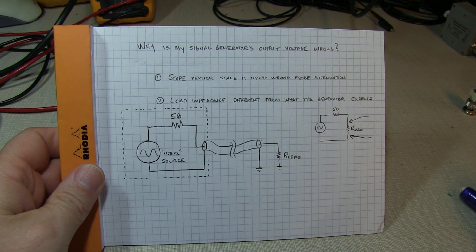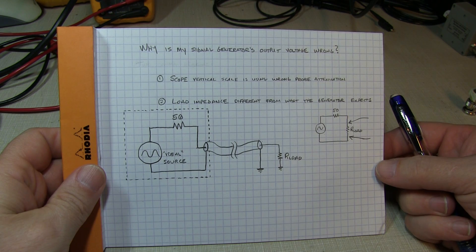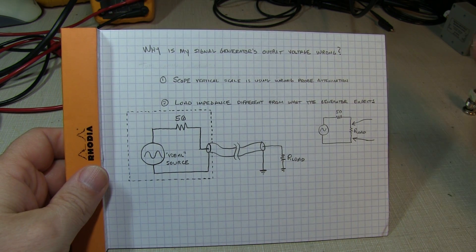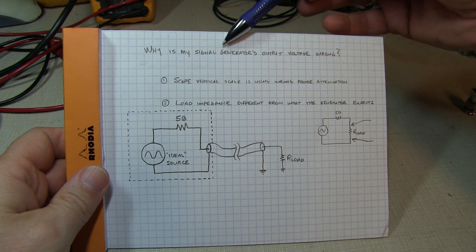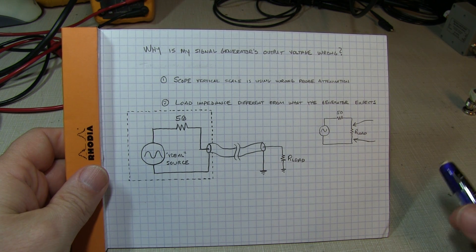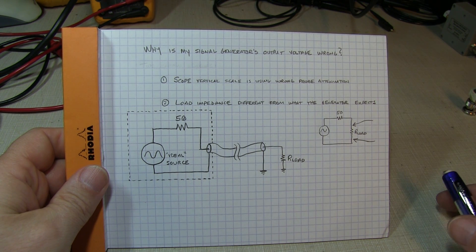In this video we're going to talk about a question that I get asked quite often in my job: why doesn't my signal generator's output voltage match what I'm seeing on my scope? Why is it wrong?